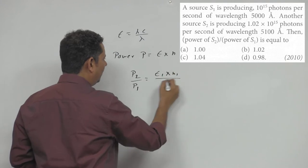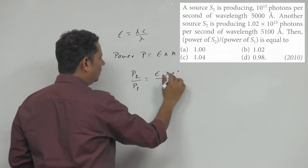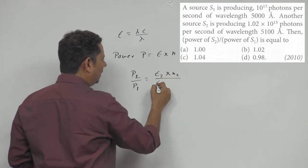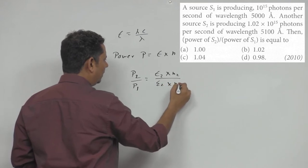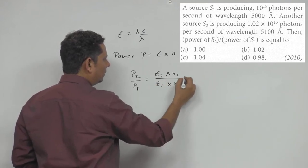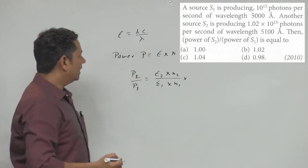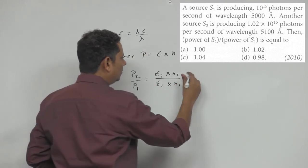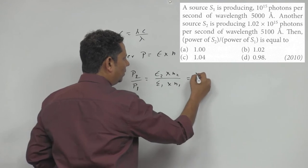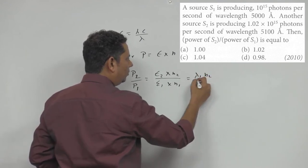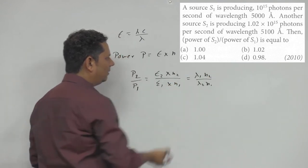Power P2 will be equal to E2 × n2, and P1 will be E1 × n1. Now substitute energy as hc/λ - the hc terms cancel out, giving inverse proportionality with lambda. So power will be equal to λ1 × n2 divided by λ2 × n1.